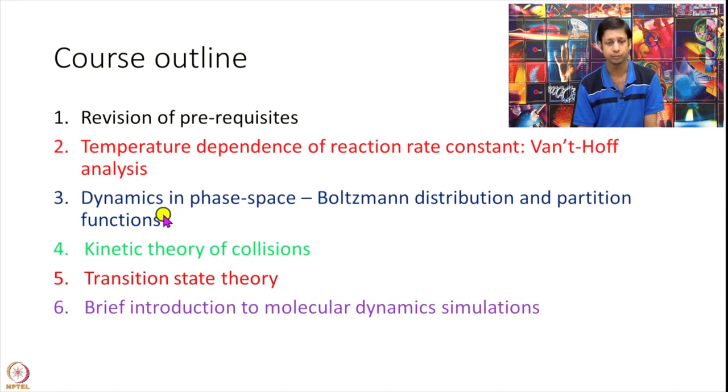We will move on to build on how do we calculate these rate constants from an atomistic picture then. And to understand how atoms move, the kinetics of atoms, we will need to know a little bit of phase space. So we will introduce this explicitly in this course. And we will introduce whatever is necessary in calculating rate constants, which will be Boltzmann distribution and partition functions.